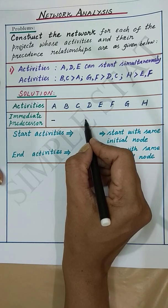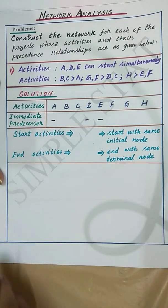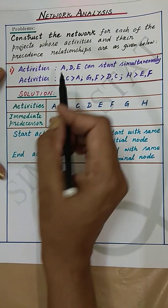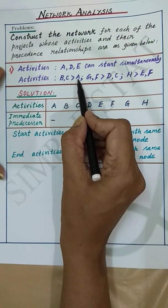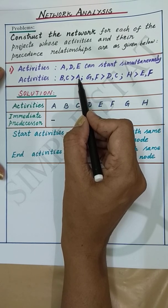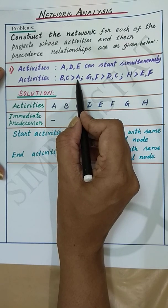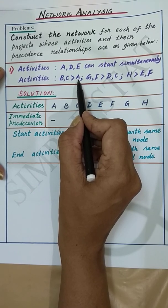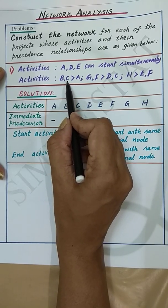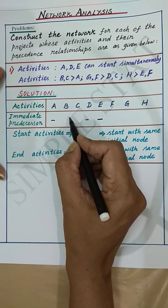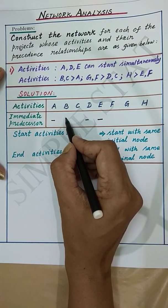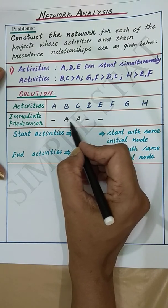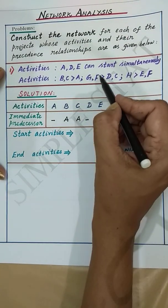A, D, and E do not have any predecessors. Next, B and C follow A — this means that activities B and C are the successors of activity A, or we can say that A is the predecessor for activities B and C. So for activities B and C, A is the predecessor.